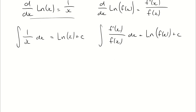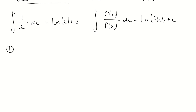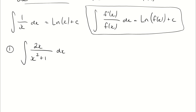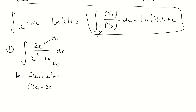Let's look at an example. First, let's anti-differentiate 2x divided by x² + 1 with respect to x. Focusing on our formula, if we let f(x) = x² + 1, the derivative is 2x — exactly what we see on the numerator. So the answer is the natural log of x² + 1 plus c.